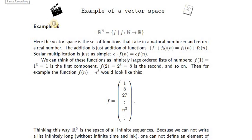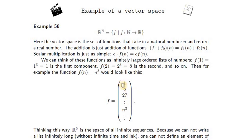The first example is Rⁿ. Note that this n refers to the natural numbers, so Rⁿ is like R-infinity — an infinite sequence of numbers. You can write this as a function from the natural numbers to the reals, where each natural number is the index. For instance, if f of n equals n cubed, then f of 1 is 1, f of 2 is 8, f of 3 is 27, and we can represent this as an infinite vector.